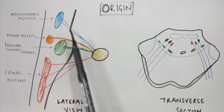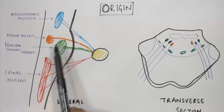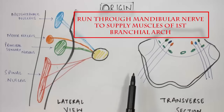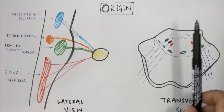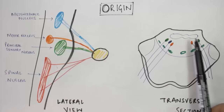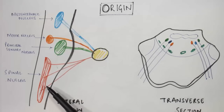The motor nucleus is an efferent nucleus situated in the pons. It sends fibers to the trigeminal ganglion, which run through the third division — the mandibular nerve — and supply the muscles of the first pharyngeal arch. In the transverse section of the pons, three nuclei of the trigeminal nerve are visible: the principal sensory nucleus, the mesencephalic nucleus, and the motor nucleus. The spinal nucleus is not shown here as it is situated at the lower medulla and upper spinal cord.